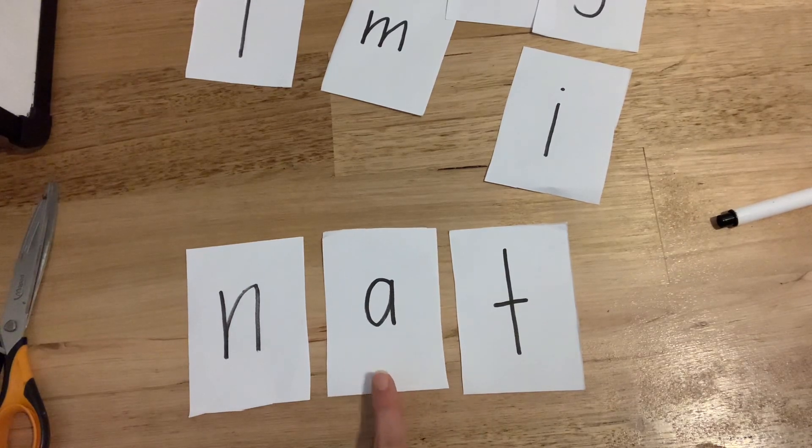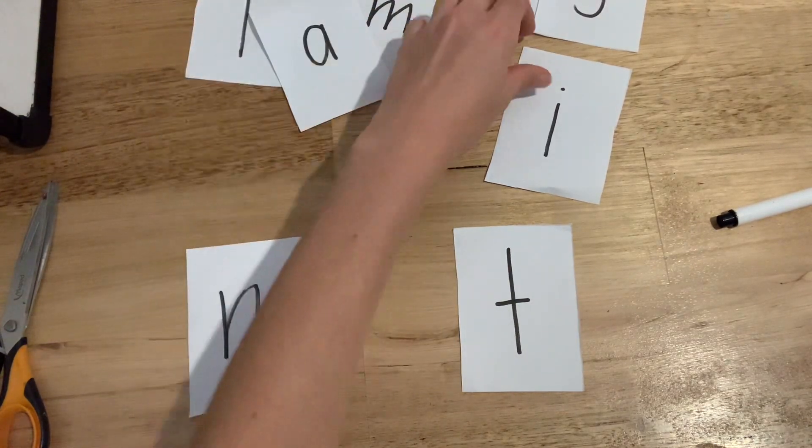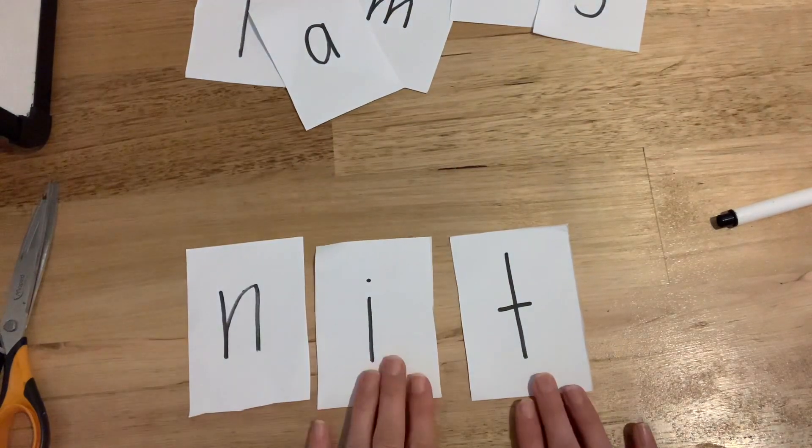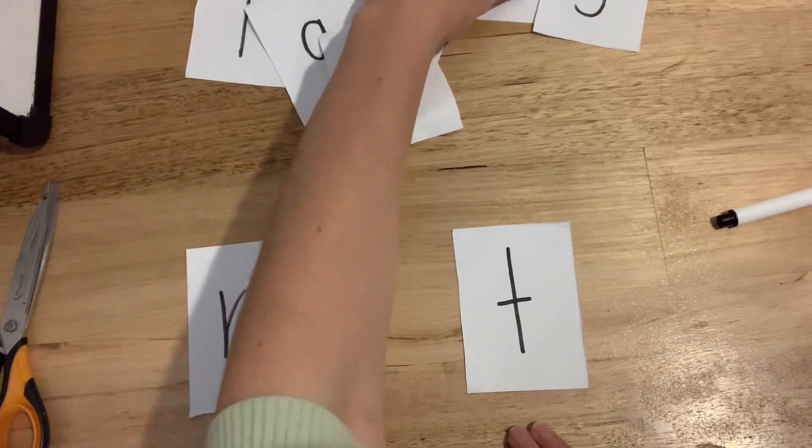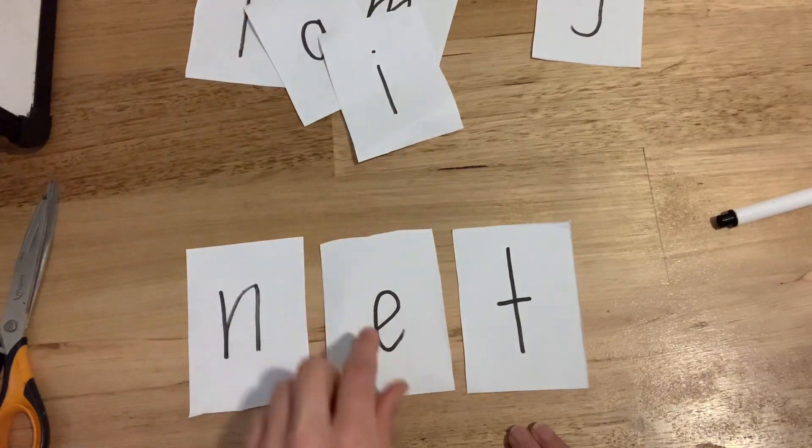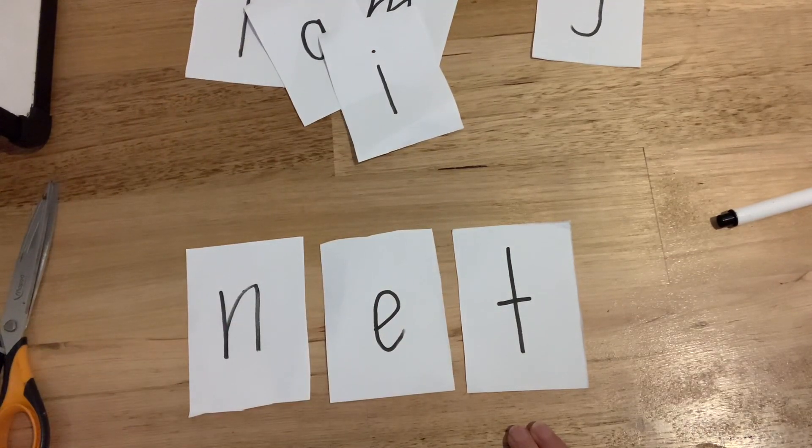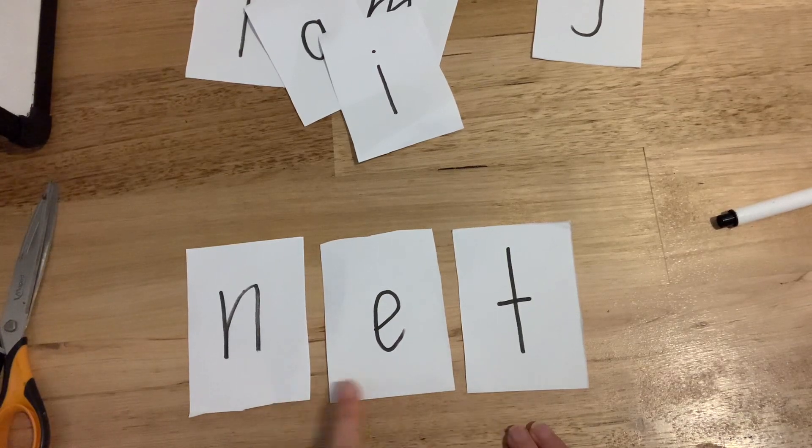Now, if I get rid of my middle sound, I can create a different word. I've put an E T there now. What does that make? N-E-T, net.